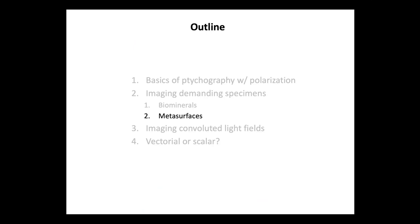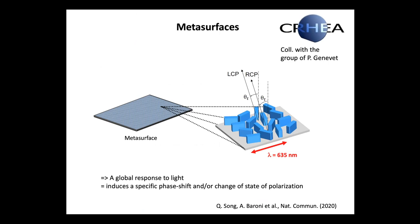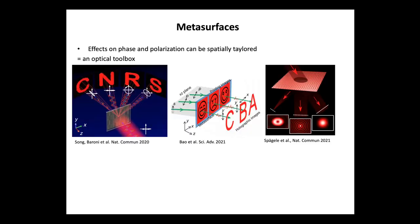Now I will move to more artificial objects: metasurfaces. Metasurfaces are optical components based on the structuring of a material at a scale smaller than the wavelength. This is a collaboration with the group of Patrice Genevay in Valbonne, experts in metasurfaces. These objects have a global response to light, and the way they are manufactured, oriented, or their thickness introduce specific phase shifts or changes of state of polarization. For us in optics, these are quite fascinating because they are a kind of optical toolbox — you can really tailor the optical property of any component.